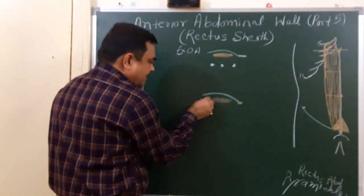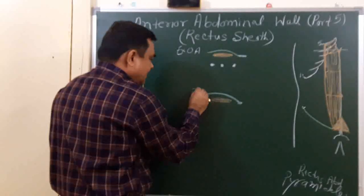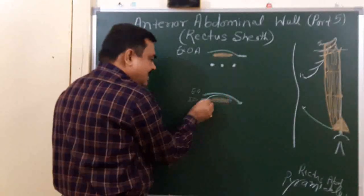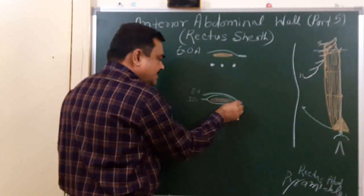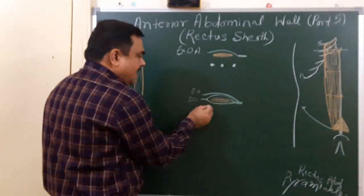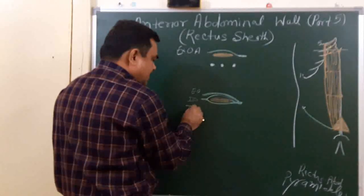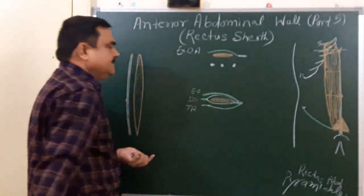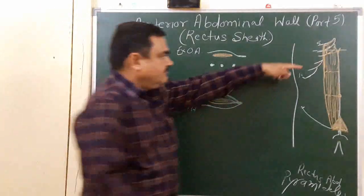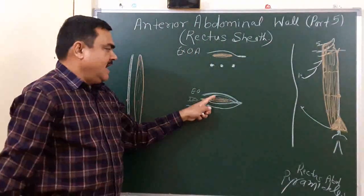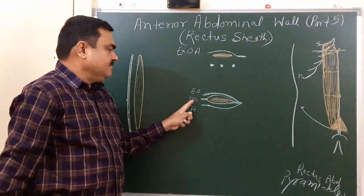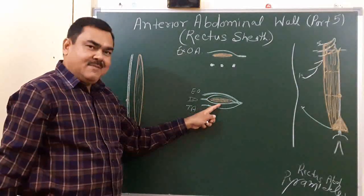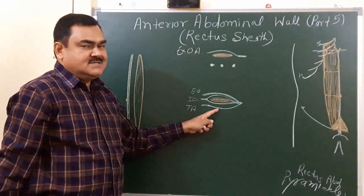Here is the internal oblique, which is divided into two laminae: the anterior lamina and the posterior lamina. This is the linea alba. Posteriorly, there is the transversus abdominis muscle. So from here to here, the anterior relations are the external oblique aponeurosis and the anterior lamina of internal oblique, and posteriorly the posterior lamina of internal oblique and the transversus abdominis muscle.